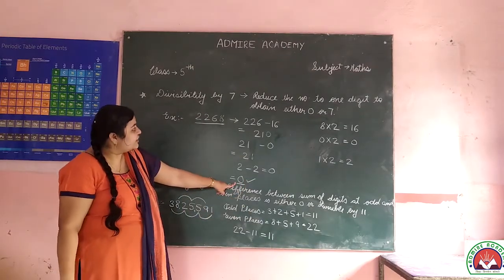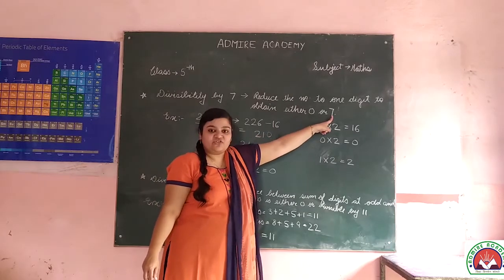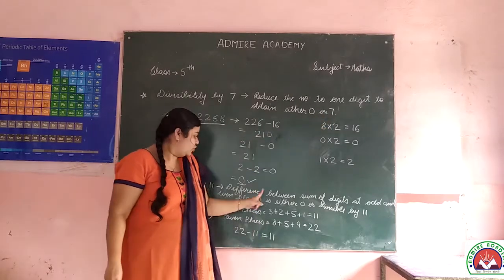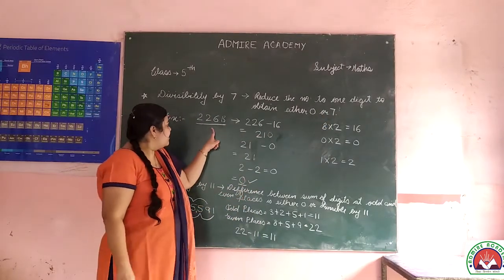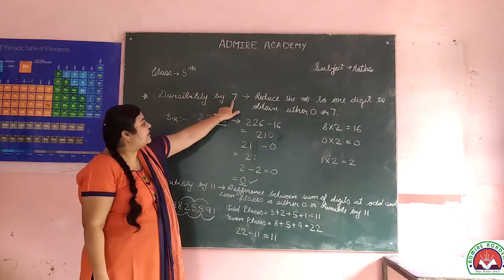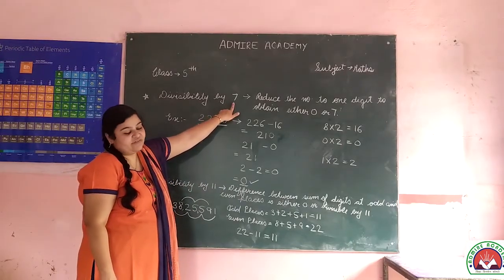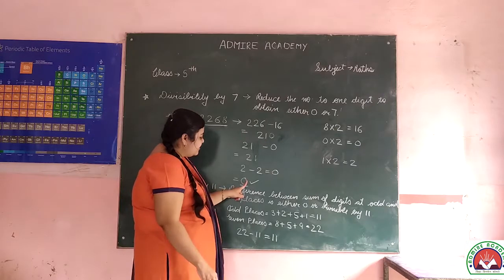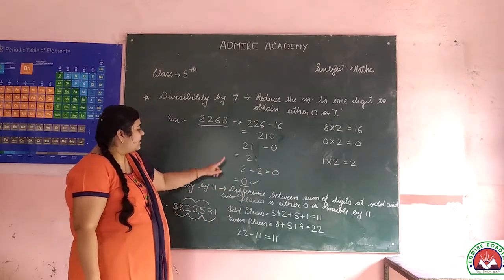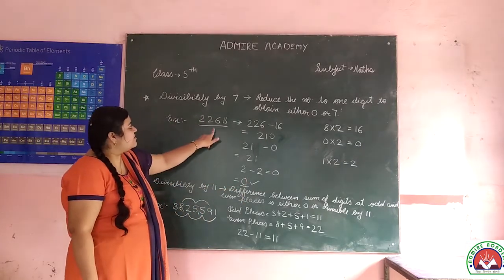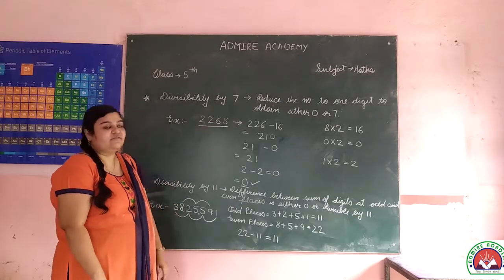The result is equal to 0. And we need either 0 or 7, so the result is 0 — yes, this number is exactly divisible by 7. If the answer were 7, we could also say that this number is exactly divisible by 7.